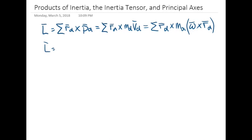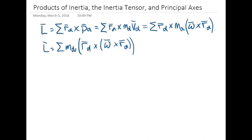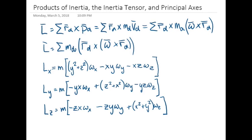Pulling out the mass, we have the sum of the mass times position cross angular velocity cross position again. Using the product rule for the cross products of vectors and expressing all vectors in terms of their x, y, and z components, we call the terms that relate the angular momentum in each direction to the angular velocity in each direction the products of inertia.